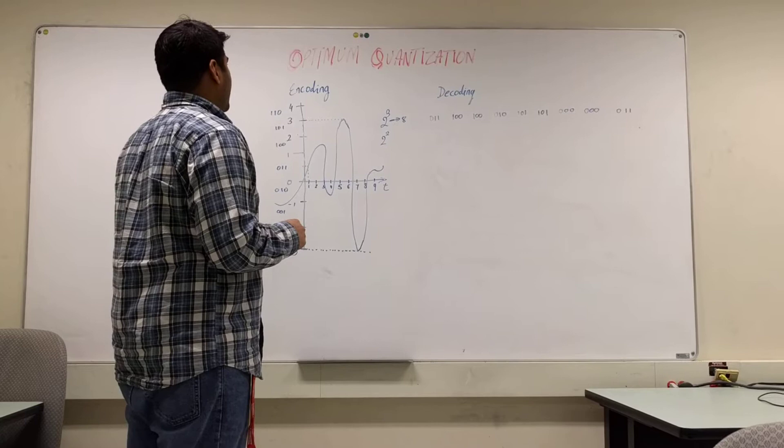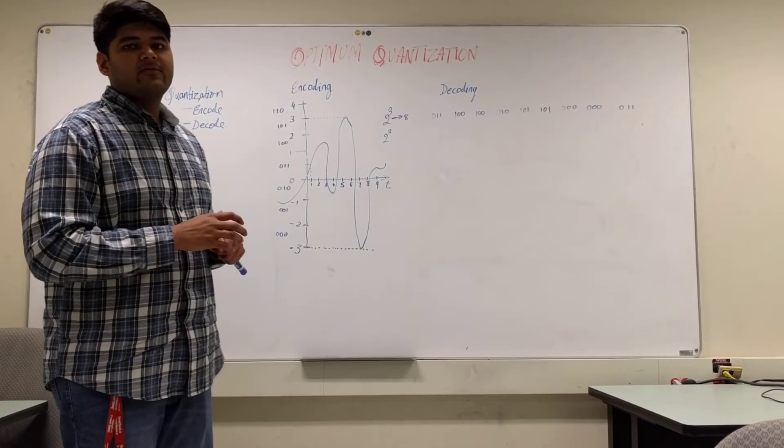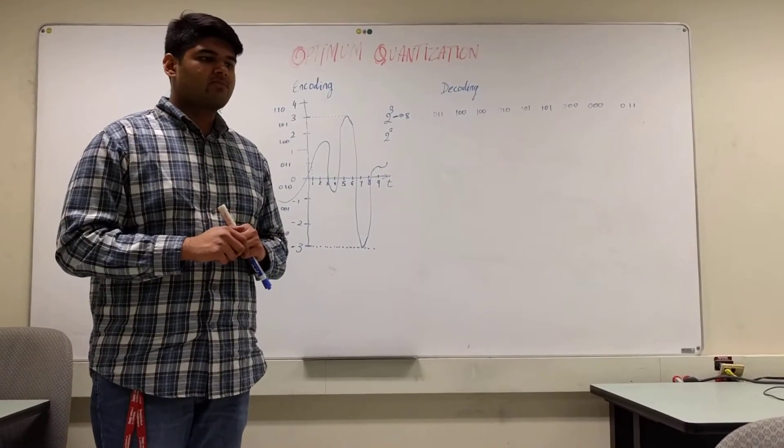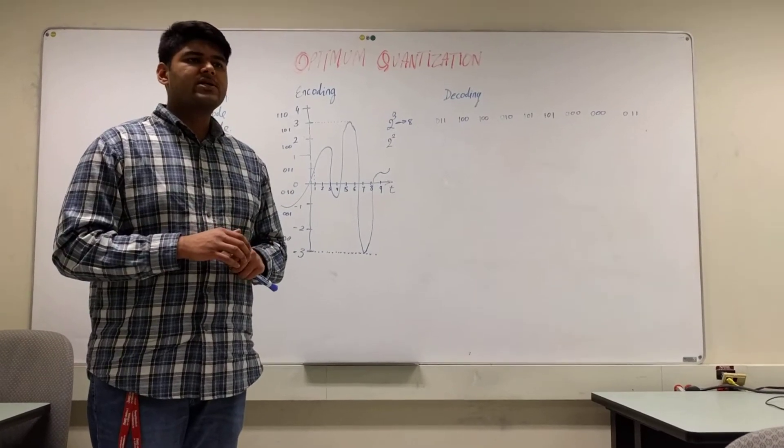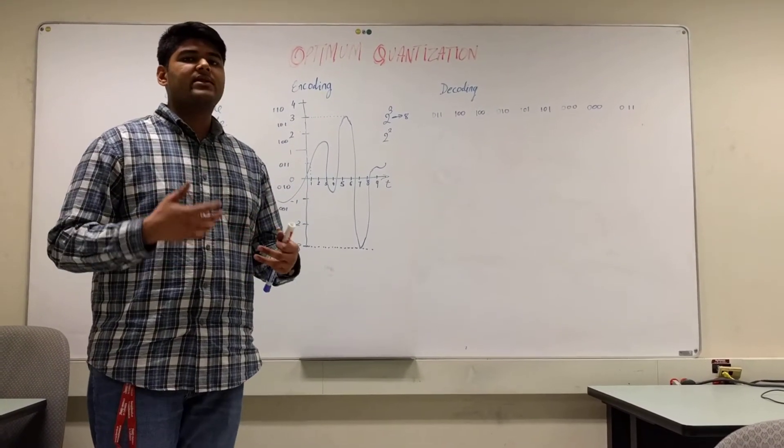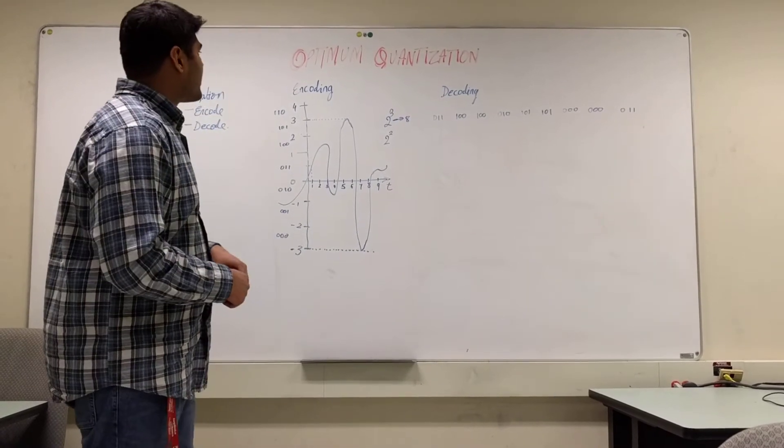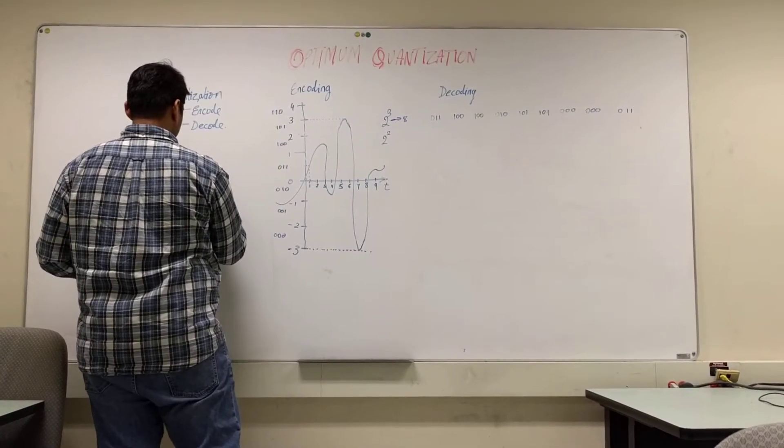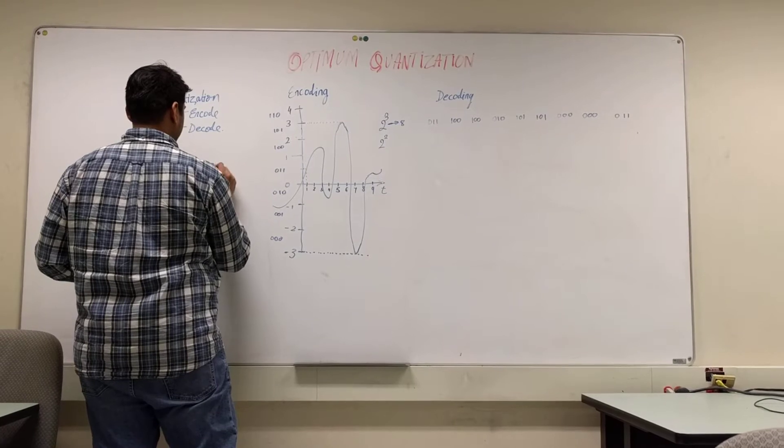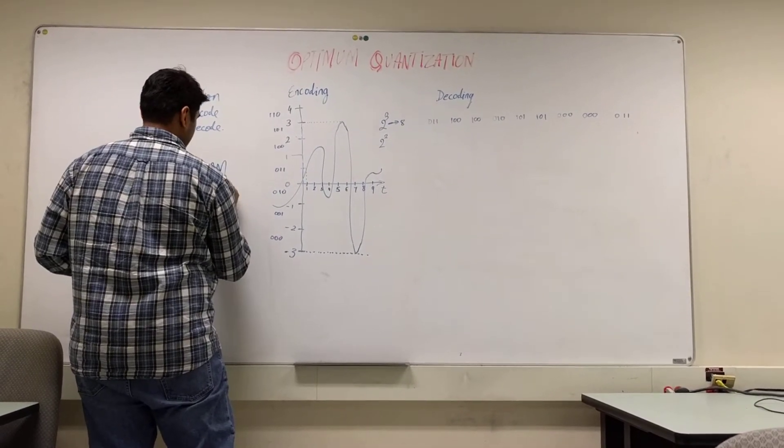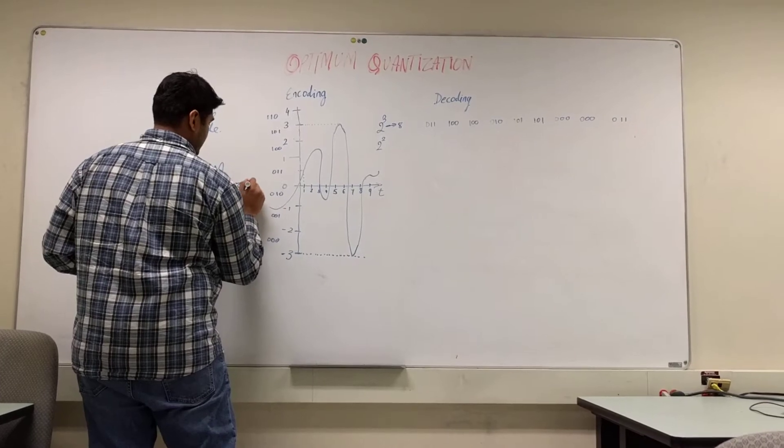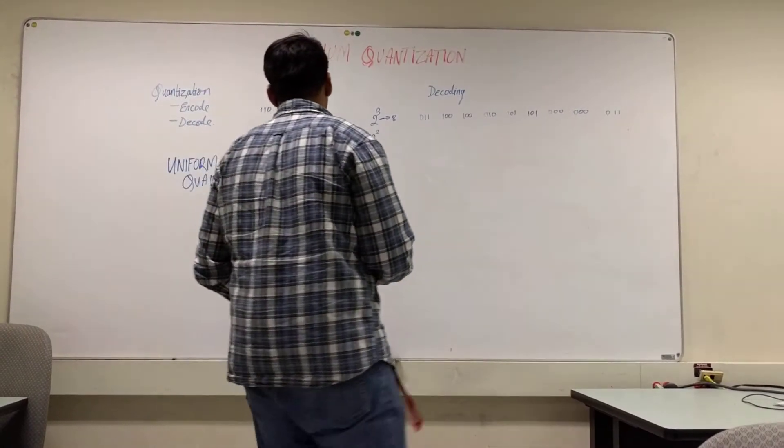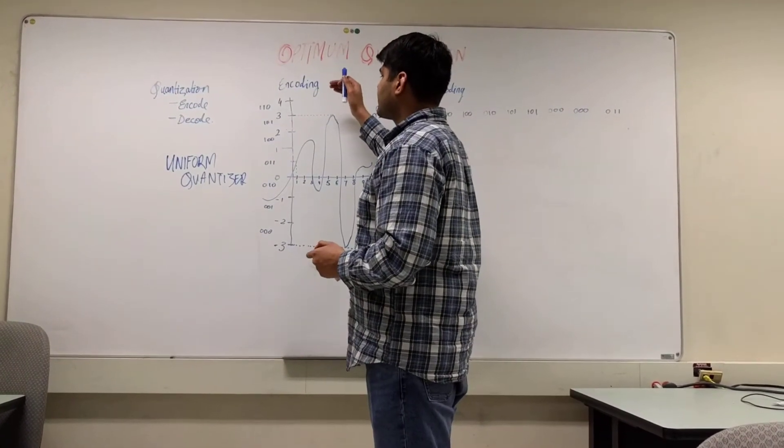We shall be taking a look at one of the algorithms of approaching the quantization technique. This is the most baseline algorithm that is used by anyone for approaching, understanding, getting their feet wet with this idea of quantization. It is called the uniform quantizer. Essentially, I shall be using this drawing right here to kind of make you understand how the uniform quantizer works.